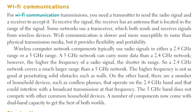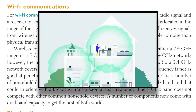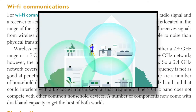Wi-Fi communication is slower and more susceptible to noise than physical transmission media, but it provides flexibility and portability. Wireless computer network components typically use radio signals in either a 2.4 GHz range or 5 GHz range. A 5 GHz network can carry more data than a 2.4 GHz network. However, the higher the frequency of a radio signal, the shorter the range. So a 2.4 GHz network covers a much larger range than a 5 GHz network, even though it's slower.